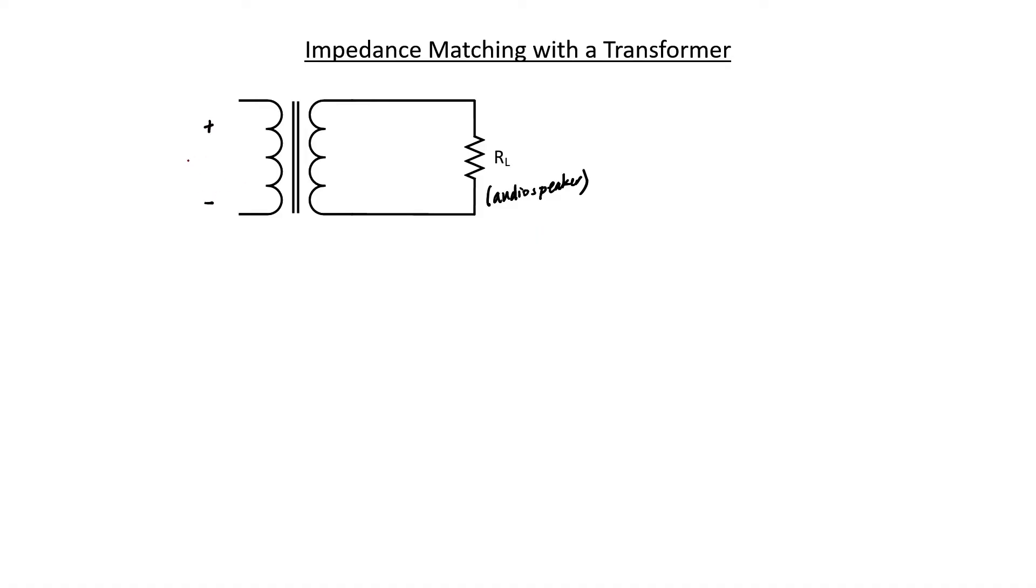Let's assume we have a transformer with 100% efficiency. Let's assume that it has a voltage of V1 on the primary side and a voltage of V2 on the secondary side. At 100% efficiency, the power on the primary side will match the power at the secondary side. Power on the primary side is I times V1. The power consumed on the secondary side is V2 squared divided by R.